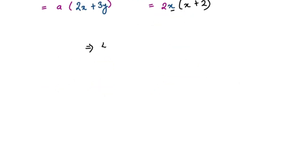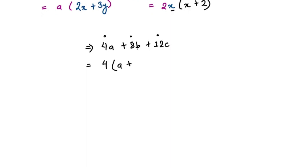What if we have 3 terms, like 4a plus 8b plus 12c? We do the same as with 2 terms — find the greatest common factor of all three numbers. The number that divides 4, 8, and 12 is 4. So 4 is the common factor. The remaining terms in the bracket are a, plus 2b, plus 3c, since 4 times 1 is 4, 4 times 2 is 8, and 4 times 3 is 12. The process is the same for 2 or 3 terms.